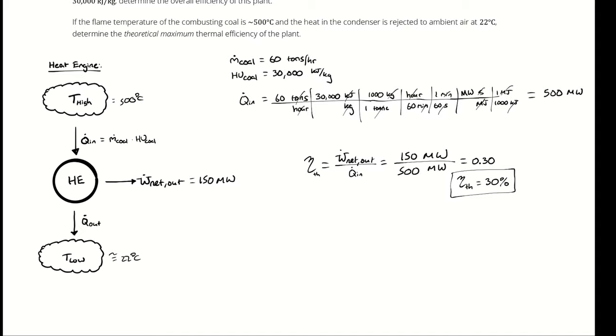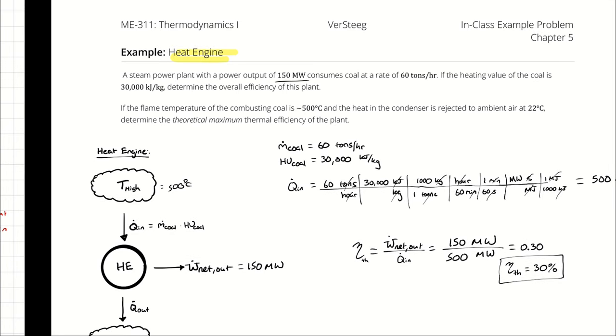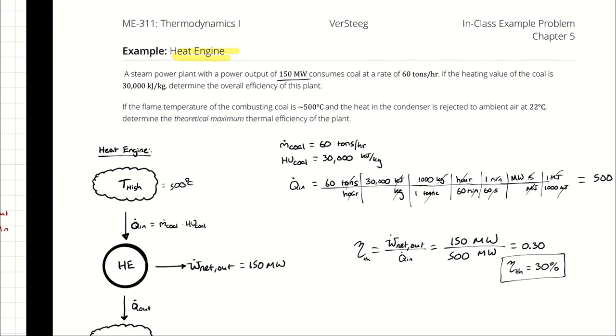Well, that begs the next question. Is that a good thermal efficiency or not? To evaluate that, we should calculate the best thermal efficiency that could be achieved under these operating conditions. Doing that will give us a ruler to compare against. If we determine that the theoretical maximum thermal efficiency is 32%, then we can say that this is a great power plant. If the theoretical maximum is 60 or 70%, then we can say that there are a lot of opportunities for improvement. If we calculate that the theoretical maximum is 28%, then we know that we cannot have the operation of this facility. It cannot consume coal at this rate and produce that much power. Doing so would violate the second law of thermodynamics.